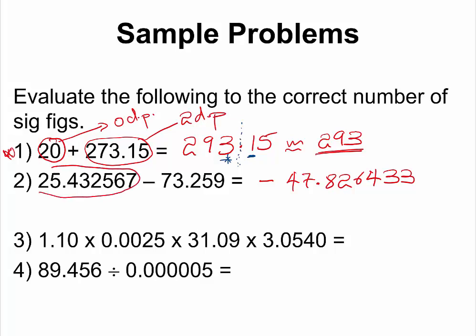This measurement has six decimal places, while this measurement has three decimal places. So our final answer would have only three decimal places. Since the number immediately after the last digit is not up to five, we simply round down, which means our final answer is negative 47.826.